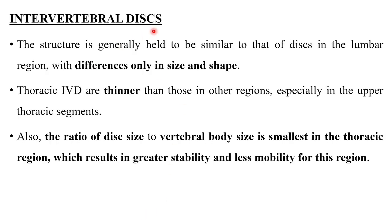Coming to the intervertebral disc, the structure is generally similar to that of the lumbar region, with differences only in size and shape. The thoracic intervertebral discs are thinner than those in other regions, especially in the upper thoracic segments. Also, the ratio of disc size to vertebral body size is smallest in the thoracic region, resulting in greater stability and less mobility.